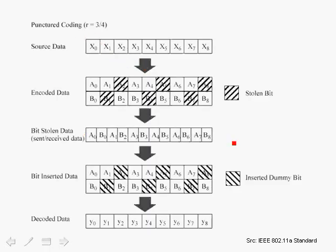This diagram, which is from the 802.11a standard, illustrates puncturing for the three-quarter code rate. We'll explain where that number comes from. This coding rate is used, for example, in 54 megabits per second. To achieve 54 megabits per second in 802.11a, we have to use puncturing.